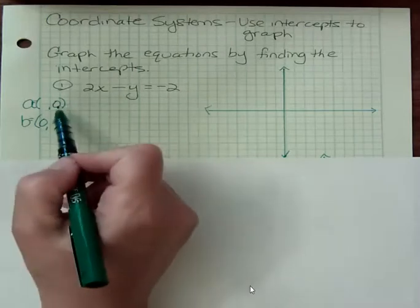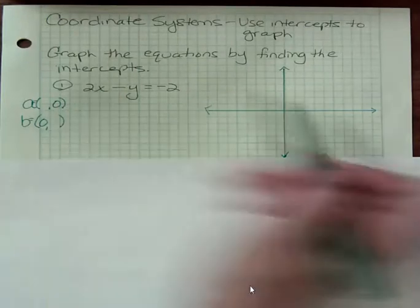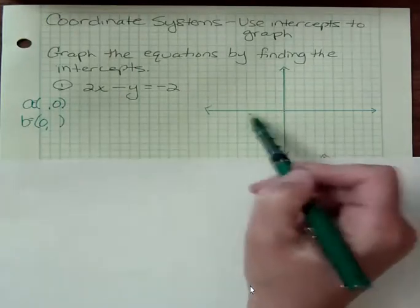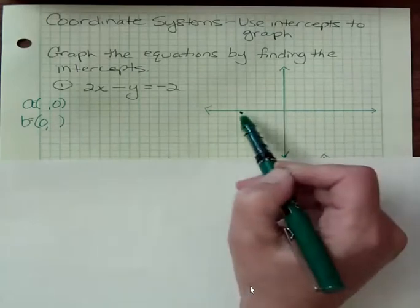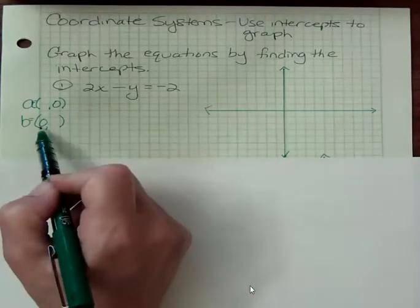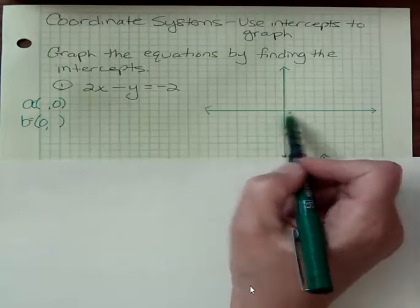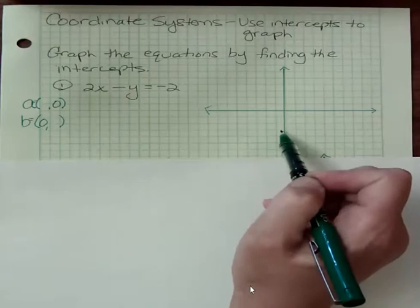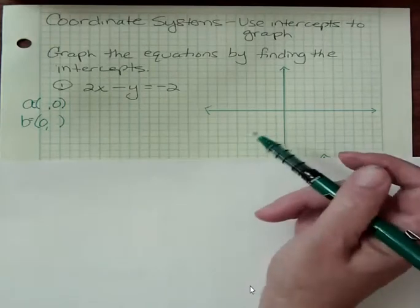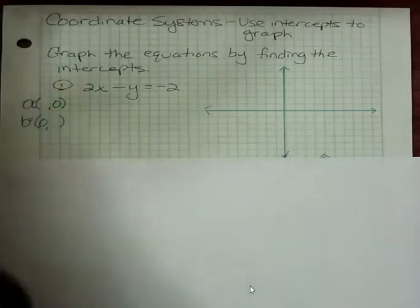If y is zero, that means I'm not going to go up or down, I'm going to be stuck on the x-axis. If x is zero, that means I'm not going to go left or right, and I'll be stuck on the y-axis. So that's how these help us find these intercepts.